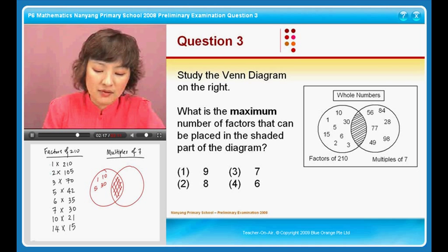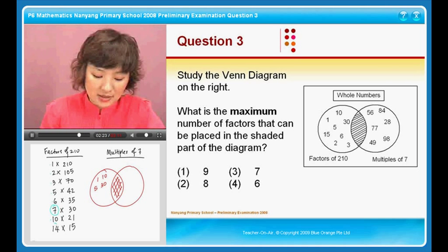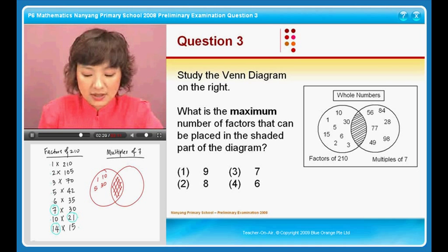1 is not, 2 is not, 3, 5, 6, 7 is a multiple of 7. Am I right? 10 is not, 14 is a multiple of 7. 15 is not, 21. 3 times 21. 30 is not. 35? Yes, it is.